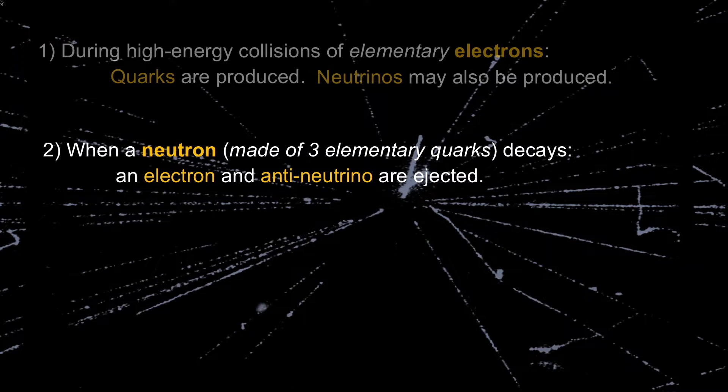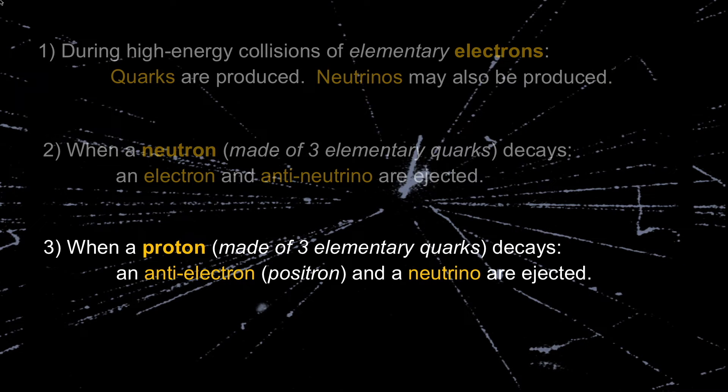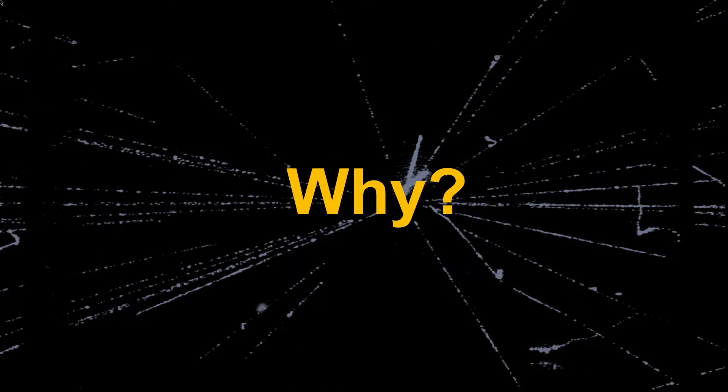It's been known for a while that when a neutron decays, which is supposed to be made of three elementary quarks, somehow an electron and an antineutrino are ejected. In a very similar process, a proton decaying, which is also made of three elementary quarks, a positron and a neutrino are ejected. Where do those come from? I think there's still a bunch of things that are missing in the standard model.